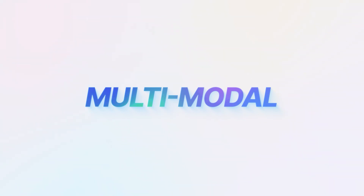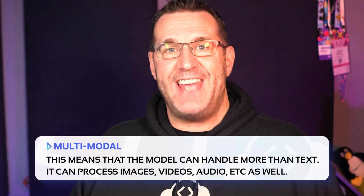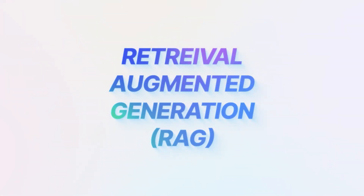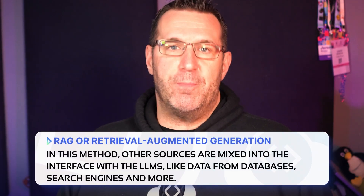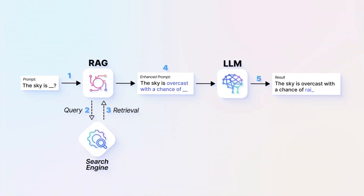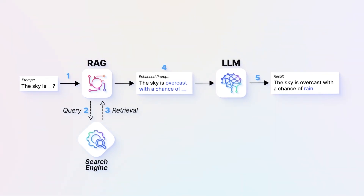Finally, here are a couple of buzzwords to be aware of. Multimodal means that the model can handle more than text — it processes images, videos, audio, etc. as well. This is a fairly new addition to models out there and it's extremely useful. RAG, or Retrieval Augmented Generation, is a method where other sources are mixed into the interface with large language models — things like data from databases, search engines, and more. This tool can hit a search engine to see if anything should be added to your prompt before it goes into the model, and it does the same thing on the back end, mixing in information from a search engine into your answer. Retrieval Augmented Generation helps with accuracy and thorough results.